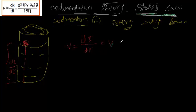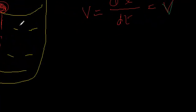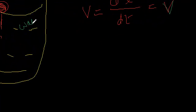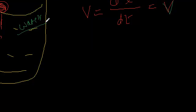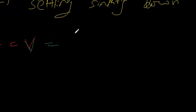The velocity at which the particle settles down in a medium — here, water is the medium — is directly proportional to the diameter squared of the particle.